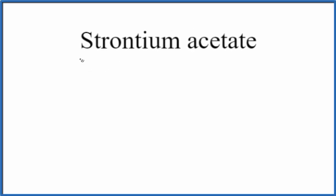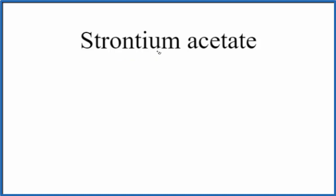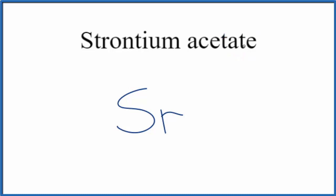In this video we'll write the formula for strontium acetate. The first thing we'll do — strontium on the periodic table, that's Sr. Acetate, with the ending A-T-E, tells us it won't be on the periodic table. This is a polyatomic ion, so you either memorize the formula for the acetate ion or you look it up.